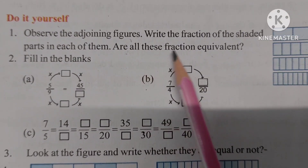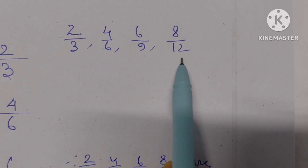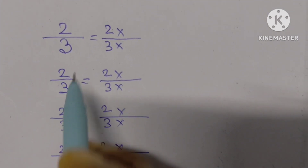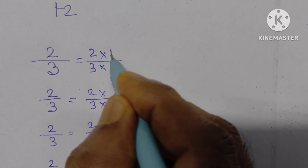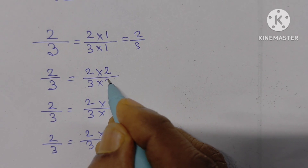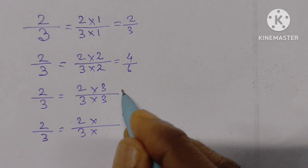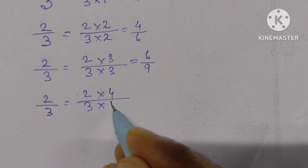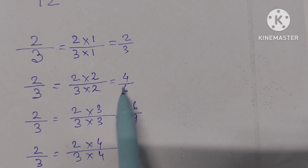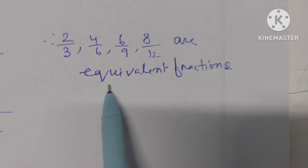Are all these fractions equivalent? Let us see. We have got 2 by 3, 4 by 6, 6 by 9, and 8 by 12. For 2 by 3, if we multiply both numerator and denominator by 2, we get 4 by 6. If we multiply by 3, we get 6 by 9. If we multiply by 4, we get 8 by 12. That means 2 by 3, 4 by 6, 6 by 9, and 8 by 12 are all equivalent fractions.